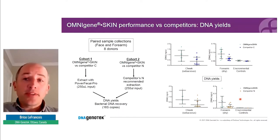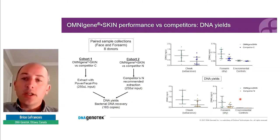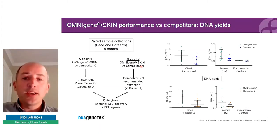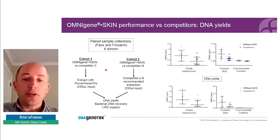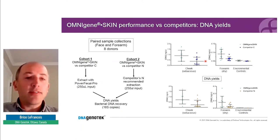We also wanted to assess the performance of OmniGene Skin versus competitors, again using paired sample collections from face and forearm — higher biomass versus lower biomass sites — targeting eight donors in two cohorts. We used a fair comparison of the collection process with similar input volumes and kits compatible with each competitor device. OmniGene Skin was able to recover two to three times more DNA from both cheek and forearm samples. The increase in yield was particularly striking for forearm samples, where dry skin has very low relative abundance.